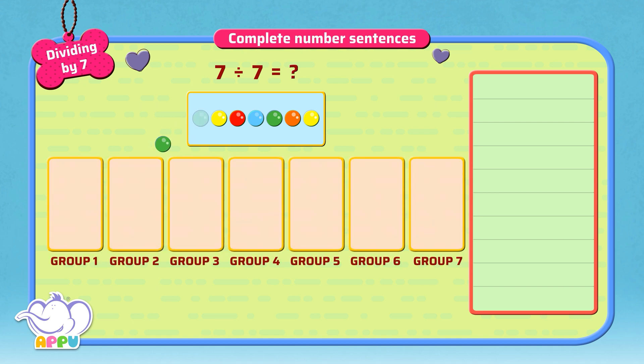So when we divide 7 beads equally into 7 groups, we get 1 bead in each group. So the answer is 1.